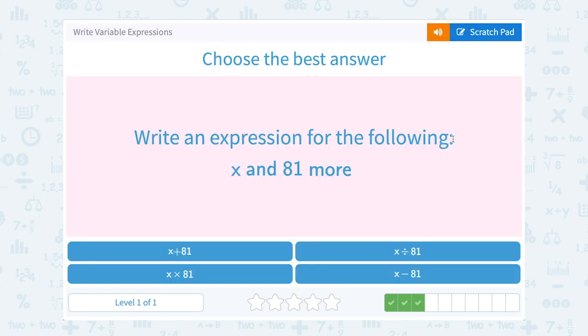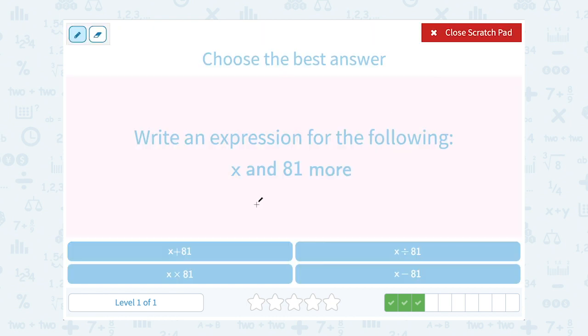Write an expression for the following, x and 81 more. If we already have x, and then we're going to add 81 more, I would say plus 81, right? More means we're making it bigger.